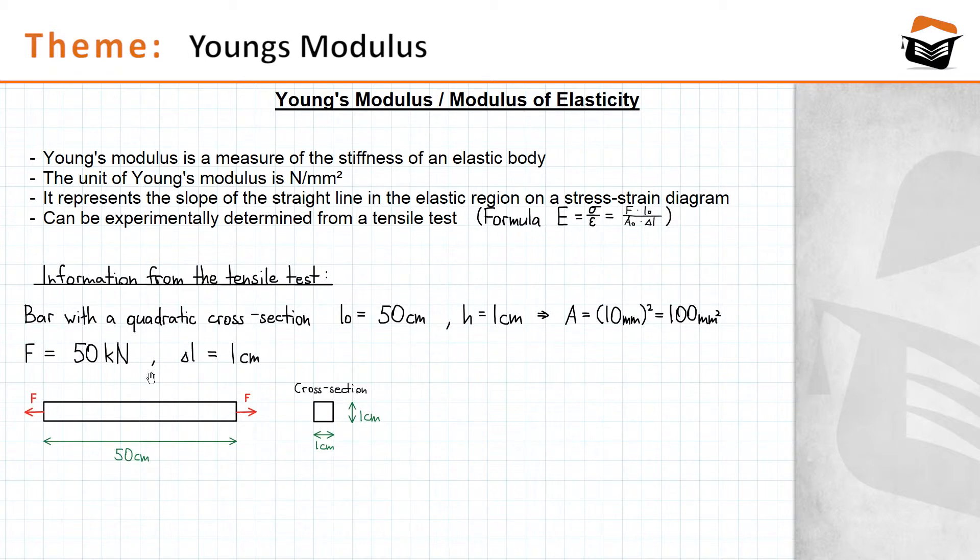So again, we're subjecting our bar to a tensile test and the tension force is 50 kilonewton. From that information, let's calculate Young's modulus for the bar. The formula for Young's modulus is here, and we're gonna adapt this version because we can just plug in our data from the tensile test.